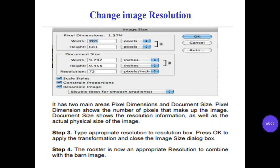Step number 5: Change Image Resolution. It has two main areas — pixel dimensions and document size. Pixel dimensions shows the number of pixels that make up the image. Document size shows the resolution information as well as the actual physical size of the image.